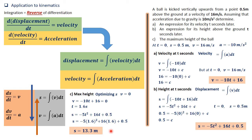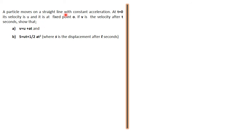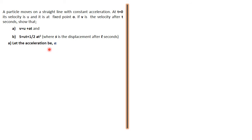Let's go to another question. A particle moves on a straight line with constant acceleration. At t = 0 the velocity is u and it is at a fixed point O. We are asked to show two formulas. Key initial conditions: when t = 0, v = u, and when t = 0, s = 0. We begin part (a) by showing that v = u + at.